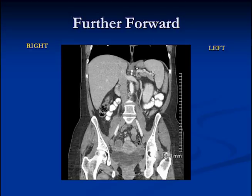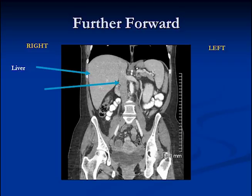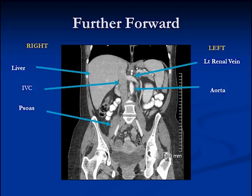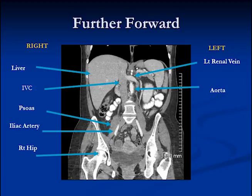Coming even further forward, we're going to see other vascular structures, still in the retroperitoneum centrally. Again the liver is visible here. This is the inferior vena cava, which courses through the liver as it goes up towards the heart. This structure coming across the aorta is the left renal vein. Sitting on top of the psoas muscle is this white structure, which is an artery — these are the iliac arteries, one on each side. This is the right hip, and again the spine.